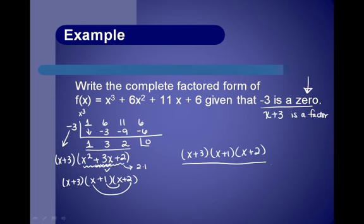So our factored form is x plus 3 times x plus 1 times x plus 2. It doesn't matter which order we write them — we just need to make sure we list all three factors.